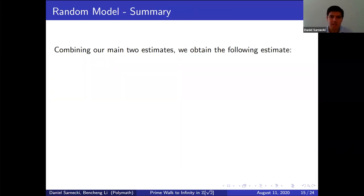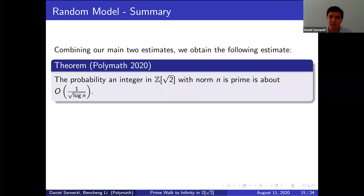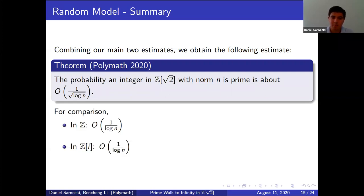Combining our two main estimates, we obtain the following summary. The probability that an integer in Z[√2] with norm n is prime is about the order of 1/√(log n). By comparison, in the integers and in the Gaussian integers, the number of integers is on the order of 1/log n. So as Ben showed earlier with that graph, the primes in Z[√2] are actually more dense than in the Gaussian integers and in the normal integers. This gives more evidence that a walk might be possible.